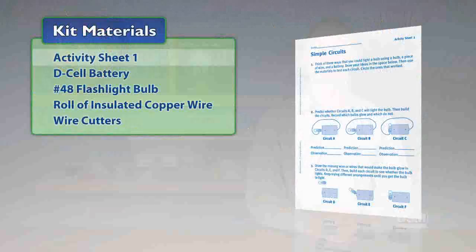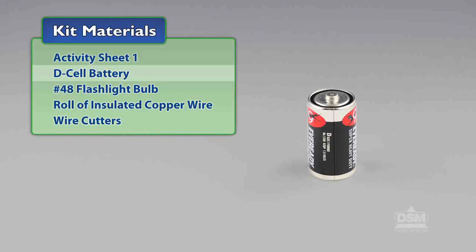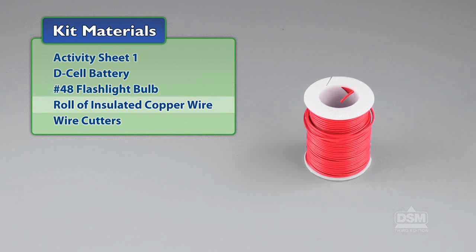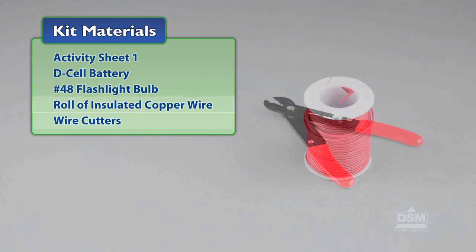You will need the following materials from the kit: Activity Sheet 1, a D-cell battery, number 48 flashlight bulb, a roll of insulated copper wire, and wire cutters.